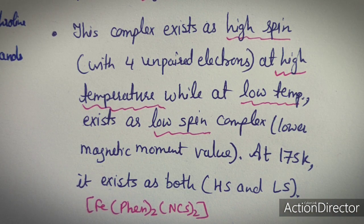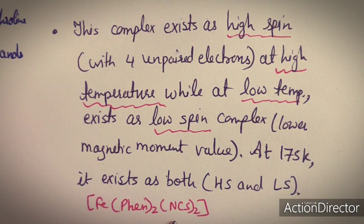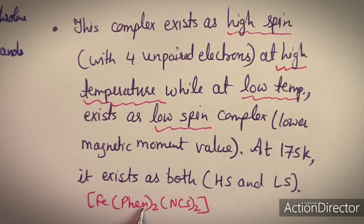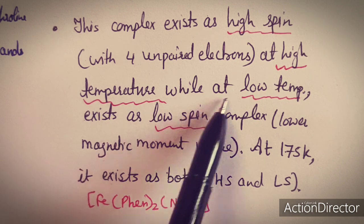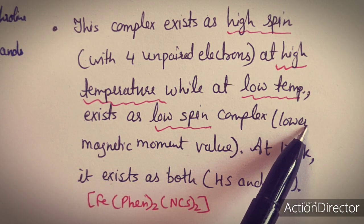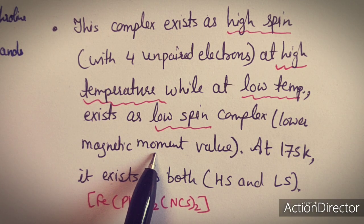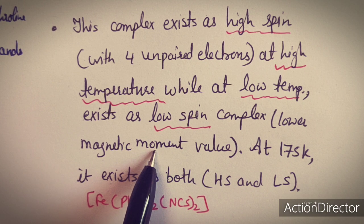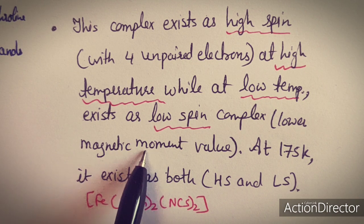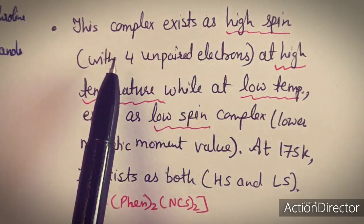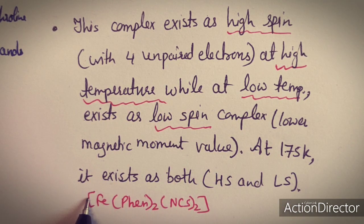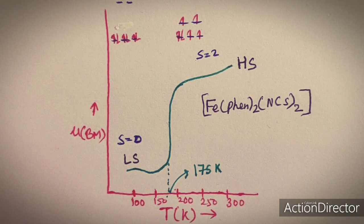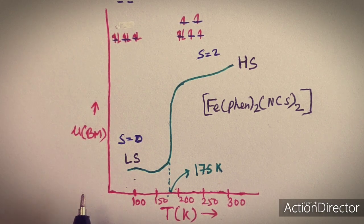In the case of the iron(II) ortho-phenanthroline NCS complex, the complex exists as a high spin complex at high temperature while at low temperature it exists as a low spin complex. This can be observed through the calculated magnetic moment value — at lower temperature the magnetic moment is very low, while at high temperature it is high, corresponding to four unpaired electrons.